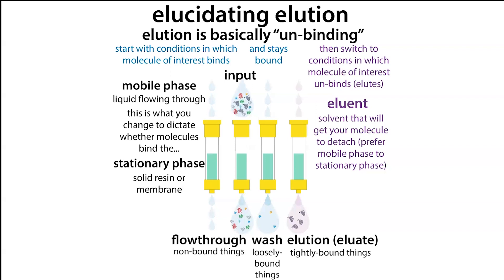What we're changing in order to get our molecule to bind or unbind is the mobile phase — the liquid that's flowing through the stationary phase, flowing through that resin or membrane. We want to manipulate whether the molecule prefers to hang out with the liquid or with the solid. The more it likes the liquid, the more it will flow through; the more it likes the solid, the more stuck it's going to be.